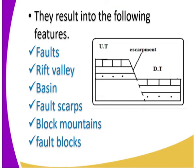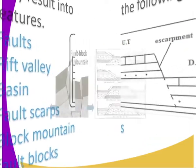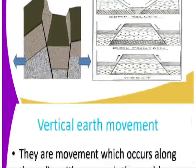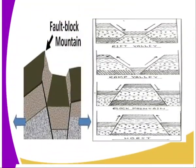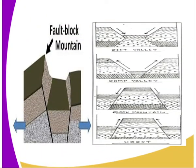These result in the following features from the Horizontal Earth Movement: we have the fault scarps, the rift valley, the basins, the fault scarps, the block mountains, and the fault blocks. From the diagram you can see the fault scarps, the scarp face, the rift valley, the fault blocks, and the escarpment — all the features that result from horizontal Earth movement.